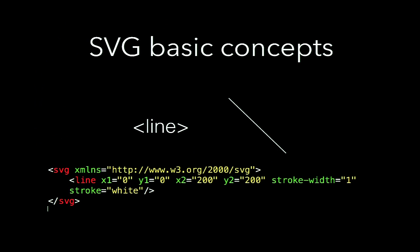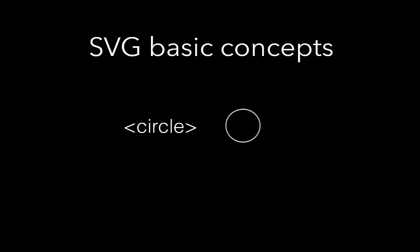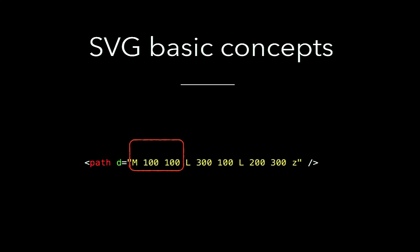This is a basic SVG element. You can see it's just an XML line element with XML attributes. It draws a line from coordinate 0,0 to 200,200. I think you can say it's human-readable and pretty easy. I'm going to skip all these SVG basic concepts because you can read this on the internet.